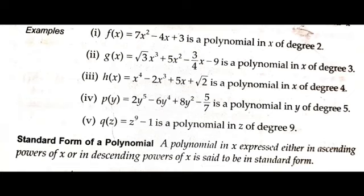A few more examples: f(x) = 7x² − 4x + 3 is a polynomial in x of degree 2. g(x) = √3x³ + 5x² − 3x/4 − 9 is a polynomial in x of degree 3. h(x) = x⁴ − 2x³ + 5x + √2 is a polynomial in x of degree 4. p(y) = 2y⁵ − 6y⁴ + 8y² − 5/7 is a polynomial in y of degree 5. q(z) = z⁹ − 1 is a polynomial in z of degree 9.